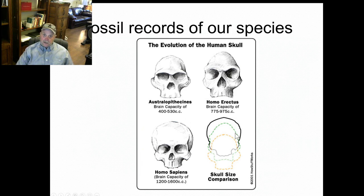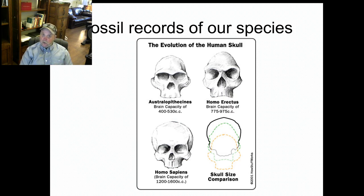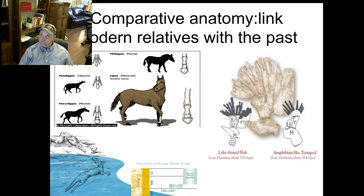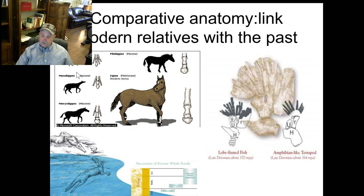If you look at the fossils of our own species, you can see that our skull has been increasing in size over time, from around 530,000 years ago to the present. It's really interesting to look at comparative anatomy. Looking at the fossil record of horses, you can see that the foot that was once four toes has fused and become one — now known as the cannon bone.